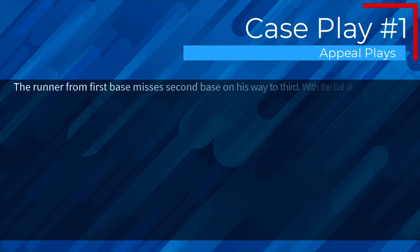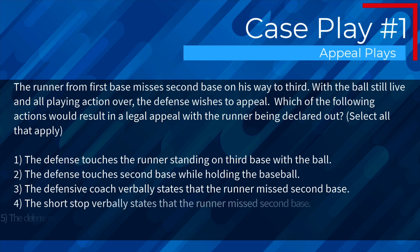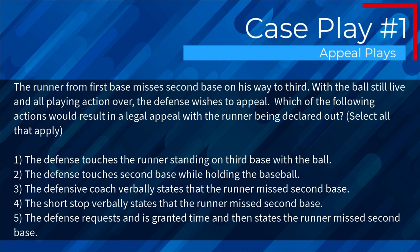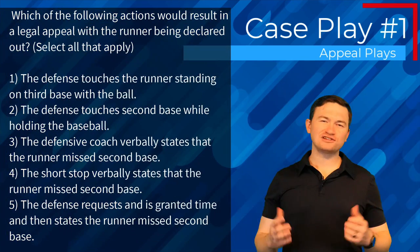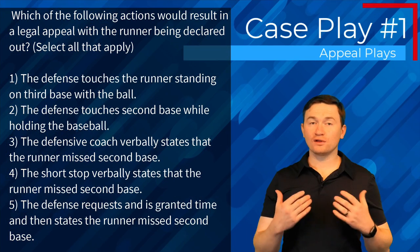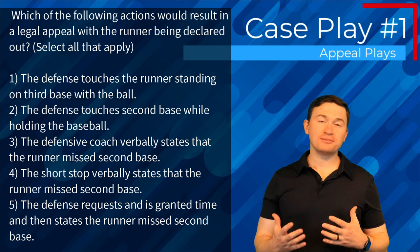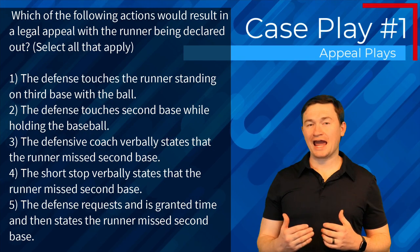Case play number one: The runner from first base misses second base on his way to third. With the ball still alive and all playing action over, the defense wishes to appeal. Which of the following actions would result in a legal appeal with the runner being declared out? The correct answers are one — touching the runner standing on third base with the ball — two — touching second base while holding the baseball — and five — requesting time and then verbally stating the runner missed second base. Options three and four, verbal appeals by the coach and shortstop, are not valid because time had not been called.